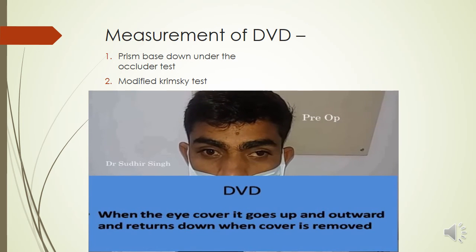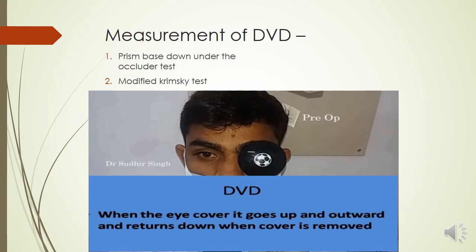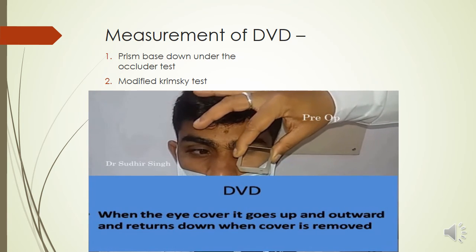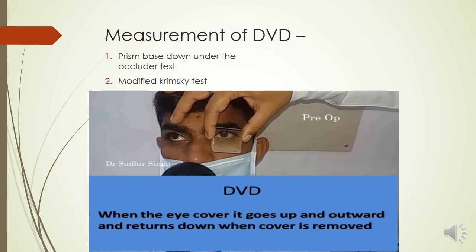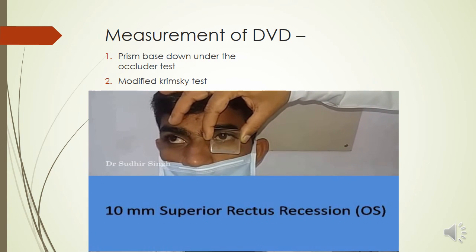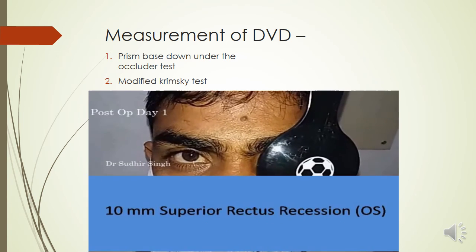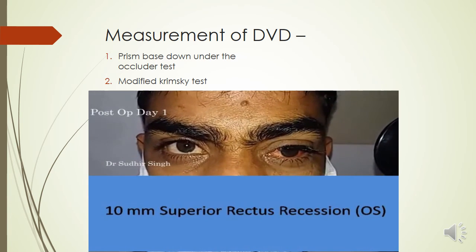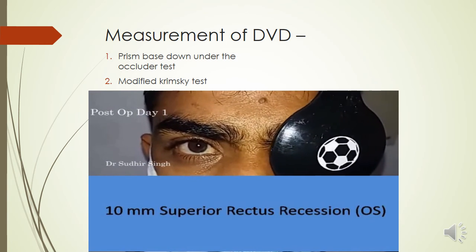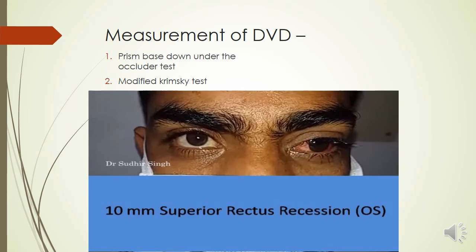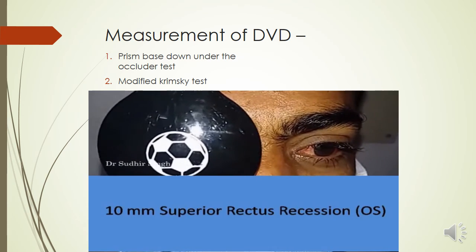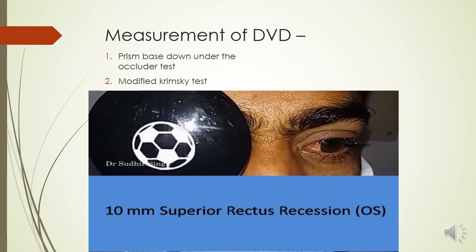To measure DVD: when you cover the patient's eye it goes into a hyper deviated state and returns to normal on uncovering. You then perform a prism base-down under occluded test — placing a prism base-down in the affected eye. The example shown is a patient who has already undergone surgery to reduce the amount of hyper deviation.